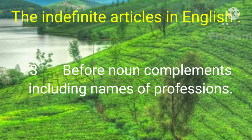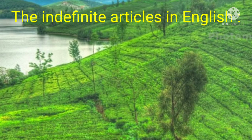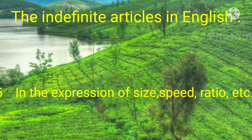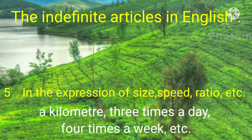Next point: before noun complements, including names of professions. She is a doctor. He became an advocate — a doctor, an advocate, they are the complements here. Next point: before numerical expressions like a dozen, half a dozen, a million, etc. Next point: in expressions of size, speed, ratio, etc. — a kilometer, three times a day, four times a week, etc.